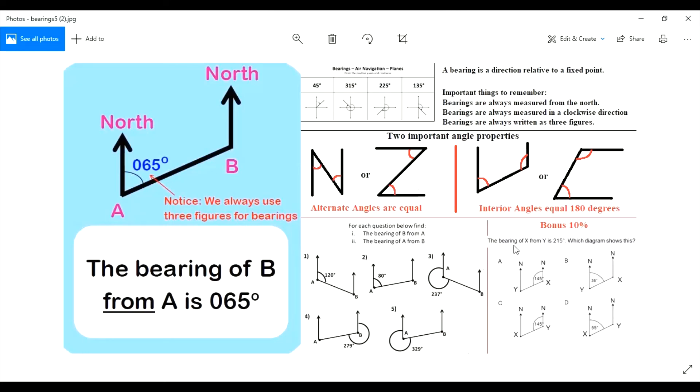And this one is saying the bearing of X from Y is 215. You have to figure out which diagram shows this, and you get 10—wow, big points. All right, bearing of X from Y. So we'll close that.